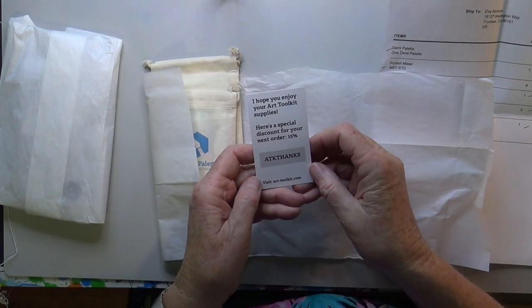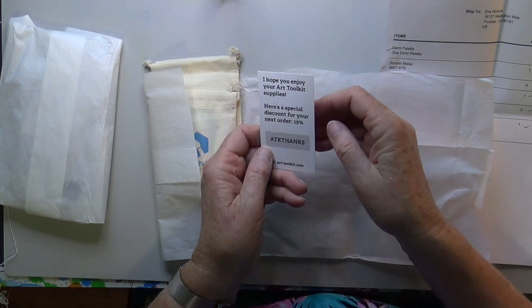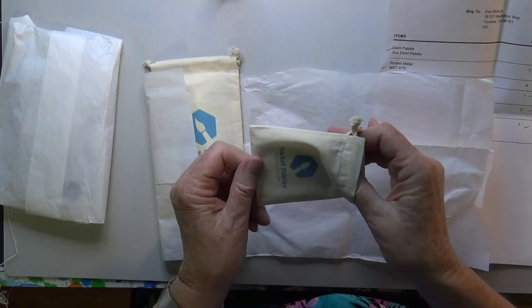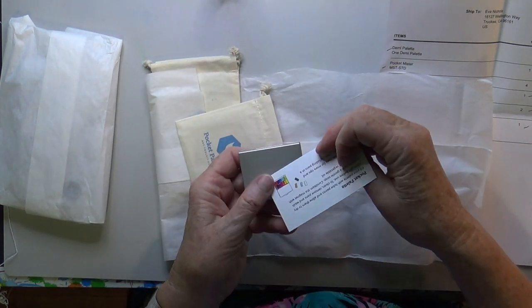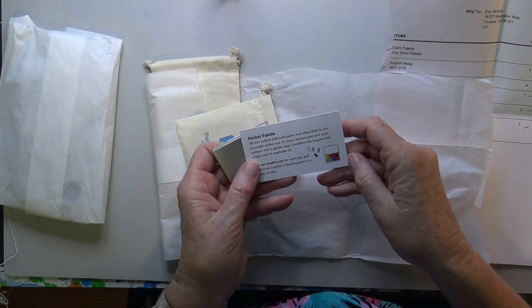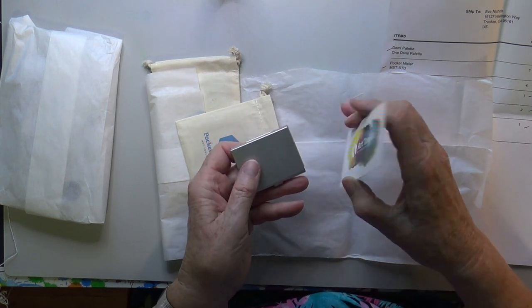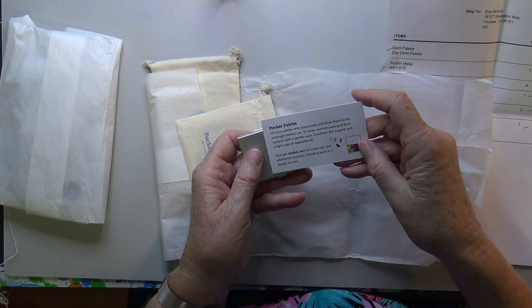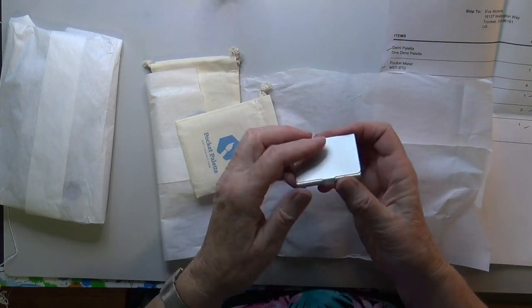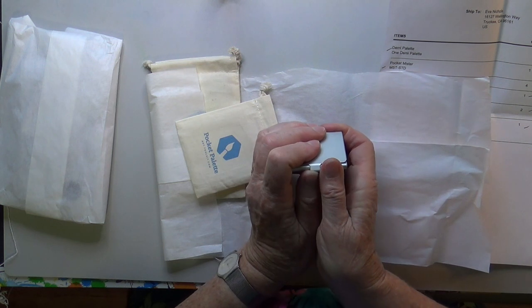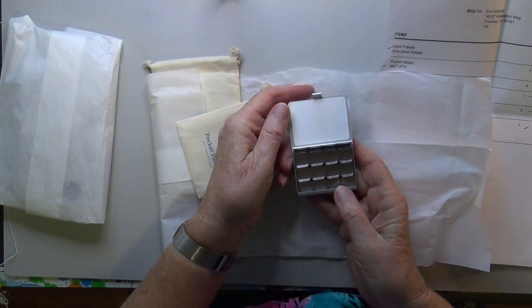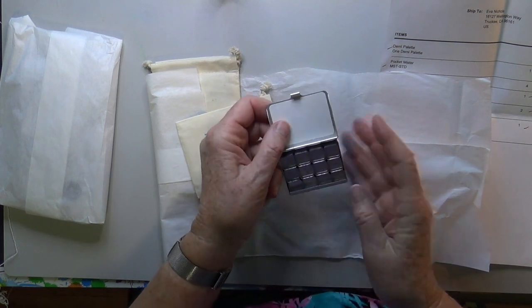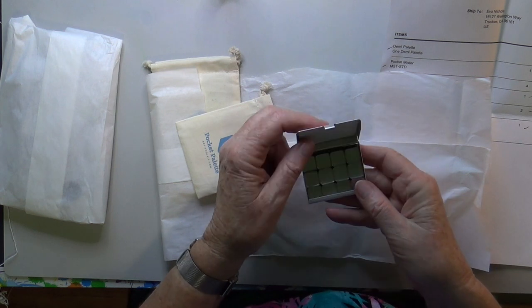Here's a nice little thank you card and a special discount for your next order—15%, so that's nice. Here's the pocket palette. That is tiny. It's the Art Toolkit by Expeditionary Art. They have a website where you can look for additional tips. Look at how tiny that is. It has 12 little half pans. I'm not a big fan of little pans like that, so I bought some double pans.